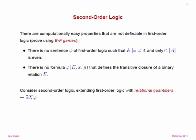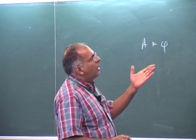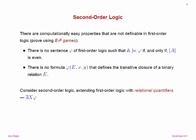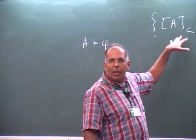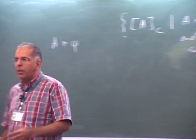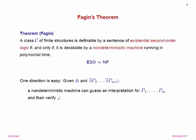We move on to second-order logic, where we allow relational quantifiers — we can say 'there exists X phi' where X is a relation symbol. This leads to Fagin's theorem, which tells us that if we allow just existential second-order quantifiers in front of a first-order formula, that gives us exactly the complexity class NP. A class of finite structures is definable by a sentence of existential second-order logic if and only if it is decidable by a non-deterministic polynomial time machine — that's the sense in which ESO captures NP.